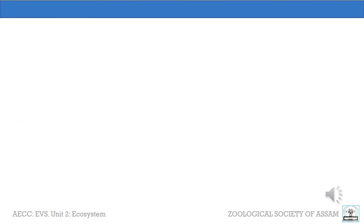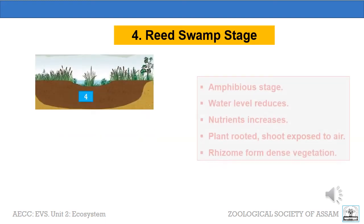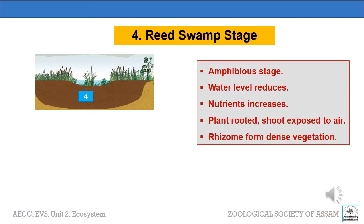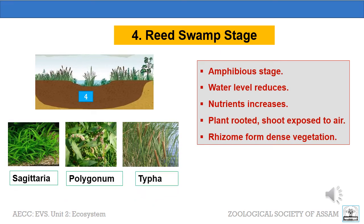As succession continues, the fourth stage is the reed swamp stage, also known as the amphibious stage. As the plants of this community are rooted, but most parts of the shoots remain exposed to air. Chief plant species are Sagittaria, Polygonum, Typha, etc. Their rhizomes form a very dense vegetation and make it more difficult for sunlight to get down into the lower depth of the pond, resulting in the death of any remaining rooted submerged or rooted floating plant species.